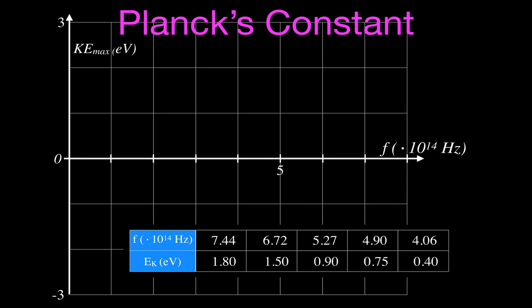Here is our graph. We have the frequency on the x-axis and the maximum kinetic energy on the y-axis, with five data points. The first data point is 1.8 electron volts at 7.44×10^14 Hz, which goes somewhere a little less than 7.5 on the x-axis. The next data point is 1.50 eV at 6.72×10^14 Hz, which is around 6 and three-quarters on the x-axis.